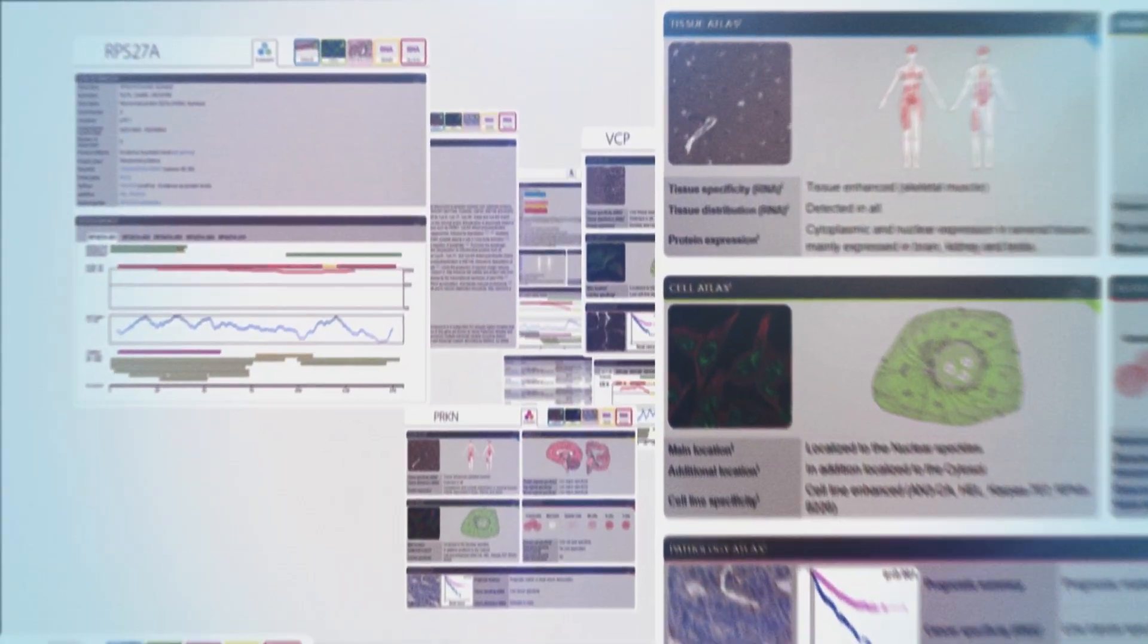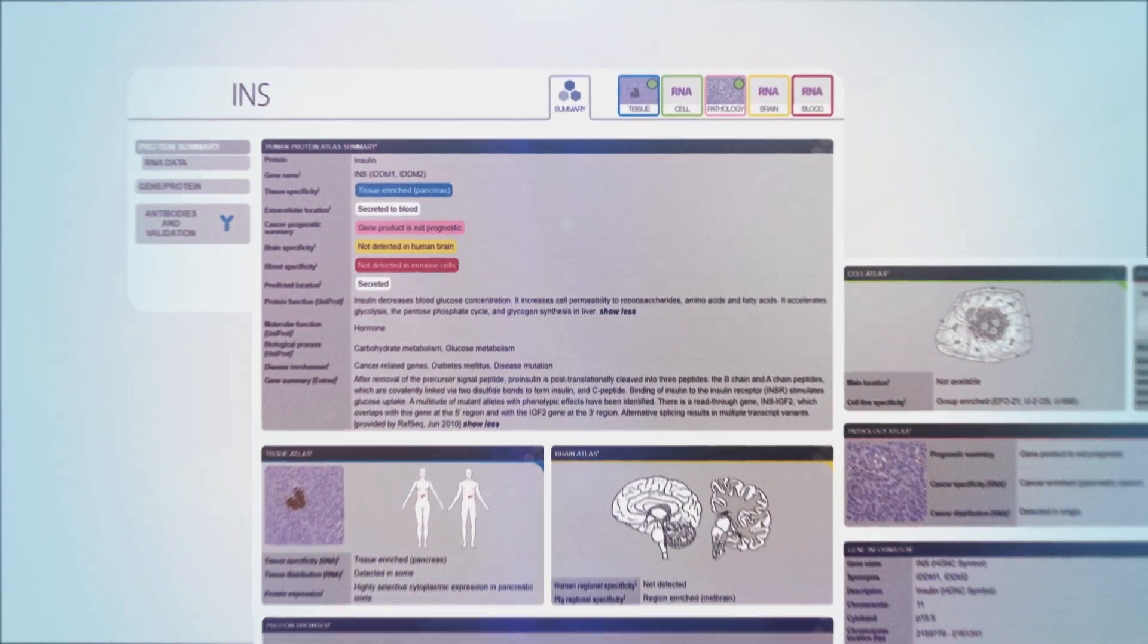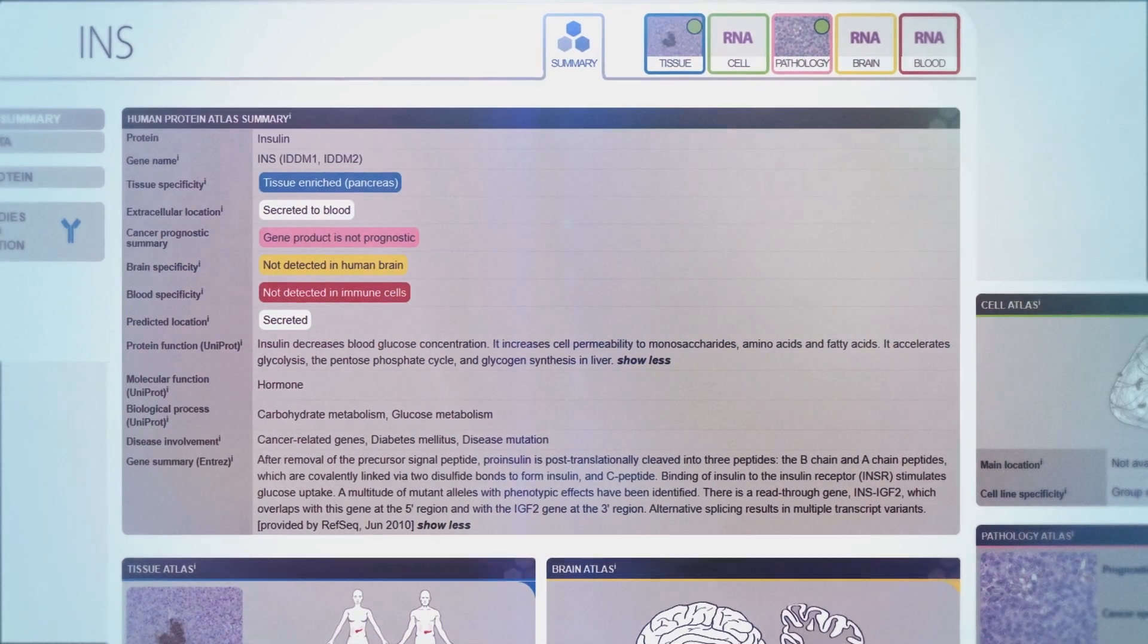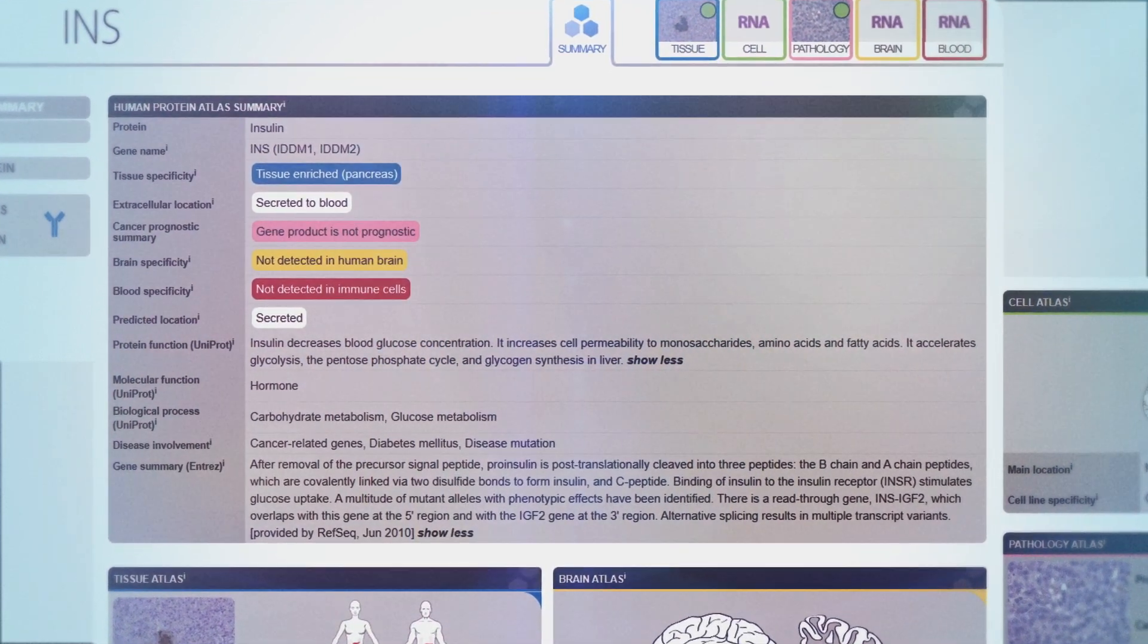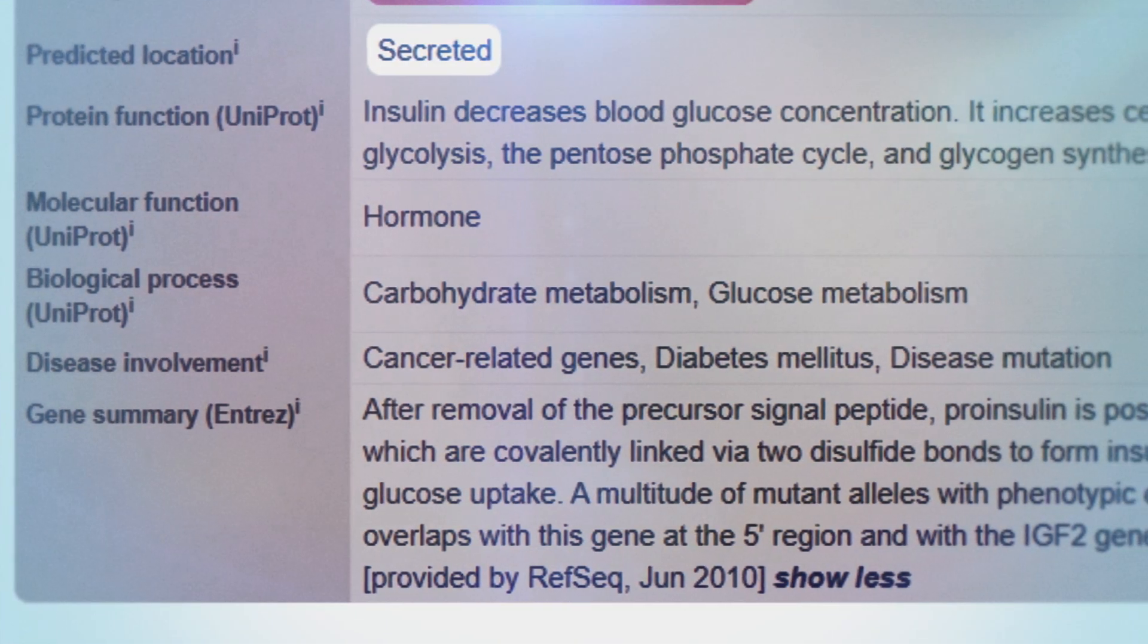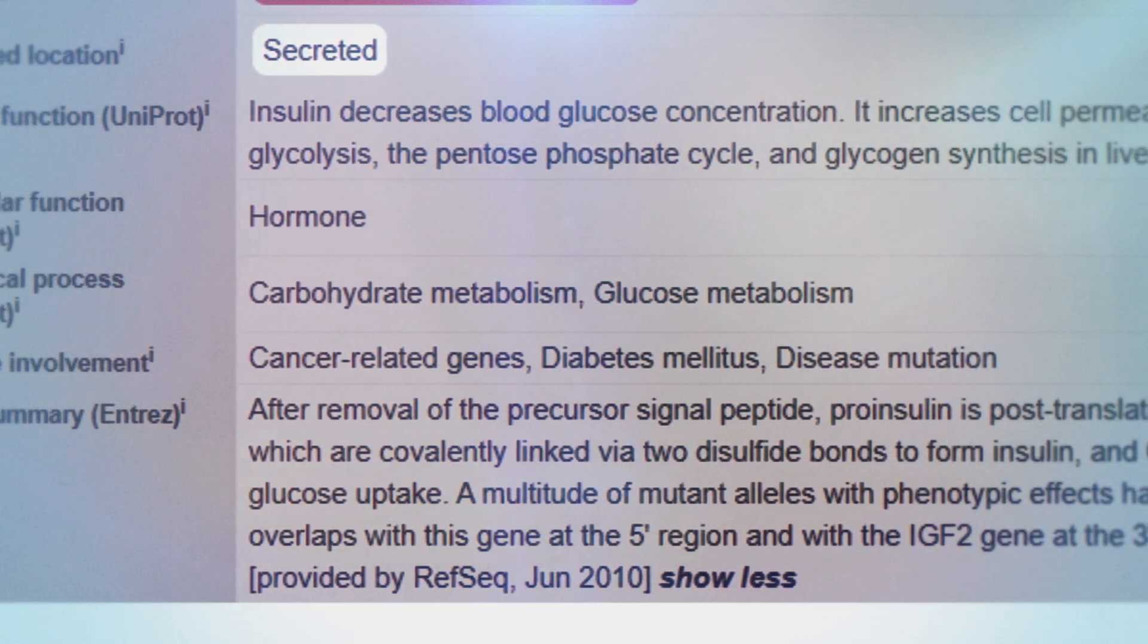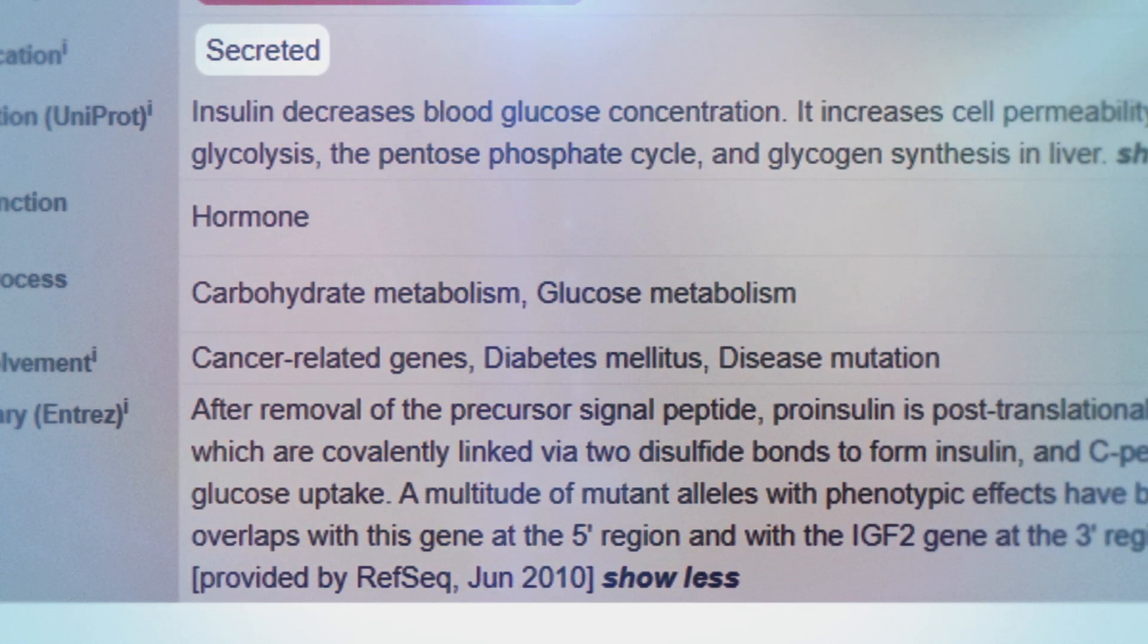For each protein, a page has been created to allow researchers to get a summary of the information gathered by the content of the different parts of the human protein atlas. For example, the information for insulin involved in diabetes is shown here. The summary page also gives information about the function of the protein, and if the protein is involved in any human disease.